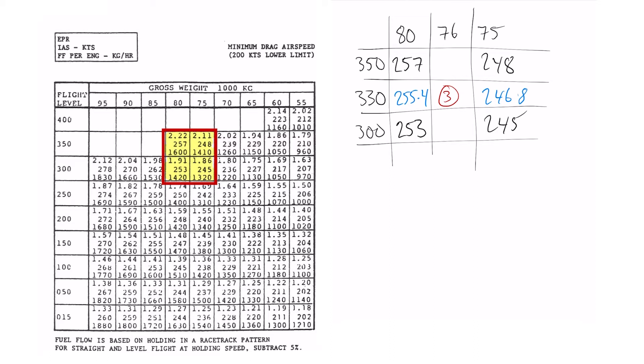Then last interpolation for box 3 we'll go 255.4 take 246.8 is 8.6 divided by 5 is 1.72. We're only times this by 1 because we're only going from 75 ton to 76 ton and I'll be adding that number on to my 76 ton data.